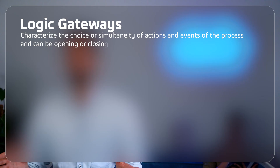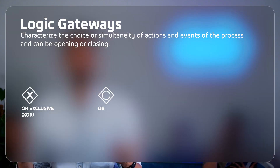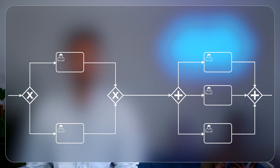Now we come on to the gateways. The gateways control the flow of the process. They can be exclusive, inclusive, or even parallel. These ensure the process follows the correct path based on conditions. So they are essential for the decision-making process.